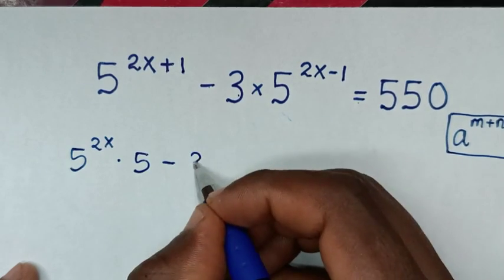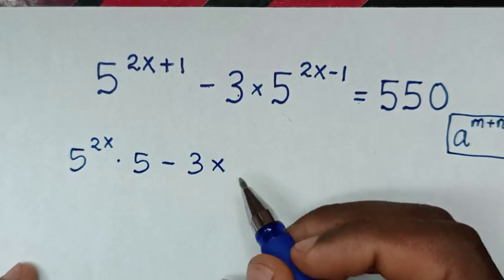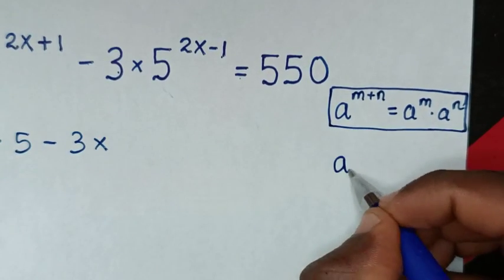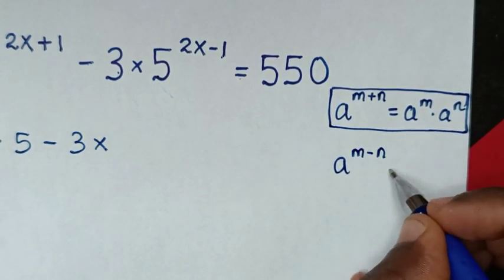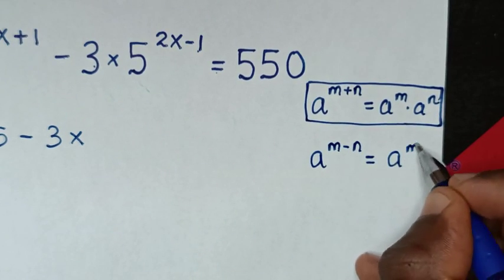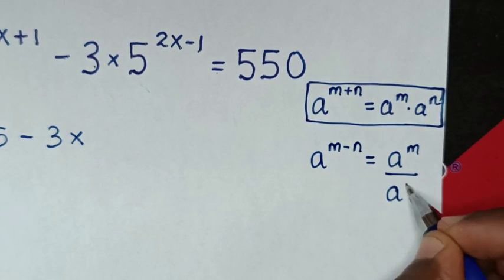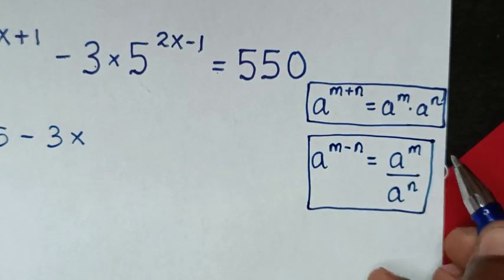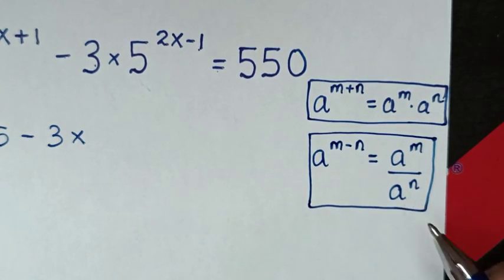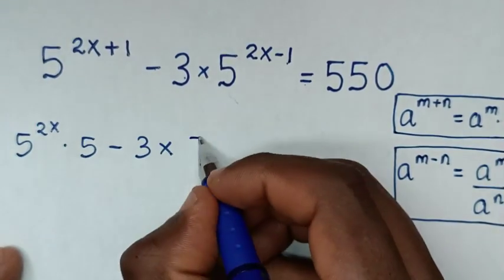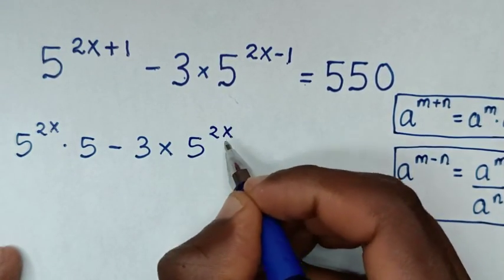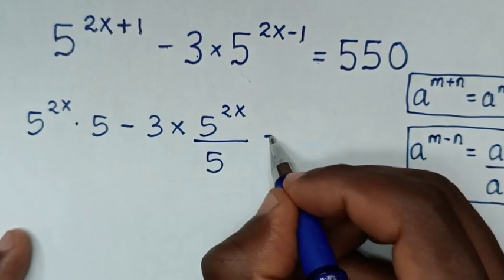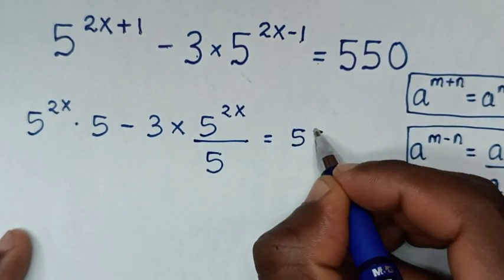Minus 3 times — from here, 5 power 2x minus 1 is in the form of a power m minus n, which is equal to a power m over a power n. So it will be division of exponents: 5 power 2x over 5 power 1, which is the same as 5. This is equal to 550.